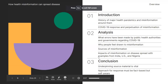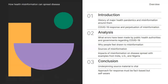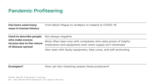Here's a bit of our agenda. First, we're going to start with the history of major health pandemics and the misinformation that surrounds them. Then we'll go into a little bit of analysis about COVID-19 and how misinformation circulated during that time. Then we'll get further into health errors, why people might feel drawn to health misinformation, some of the sources of misinformation and their impacts, as well as a conclusion with great pointers for you and why it's so important.